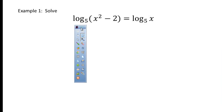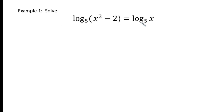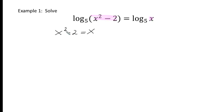So here we have log base 5 equal to another log base 5. When you have a 1-to-1, it makes sense that the argument parts would have to be equal to each other. So because it's a 1-to-1, we can set the argument parts of each of the logs equal to each other. We have a quadratic equation, so we have to use our quadratic skills — completing the square, quadratic formula, factoring — whichever method you prefer is fine.